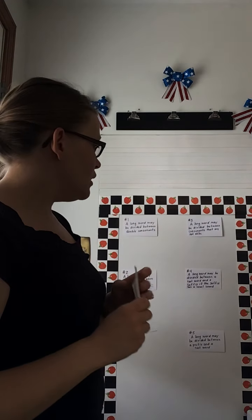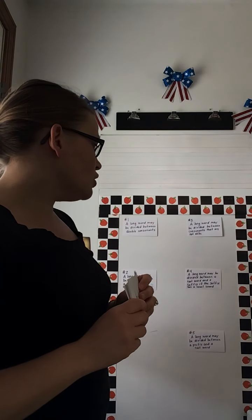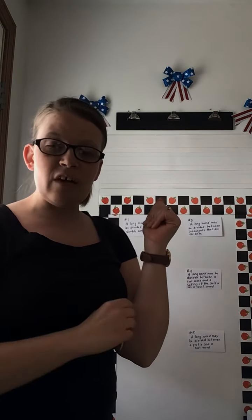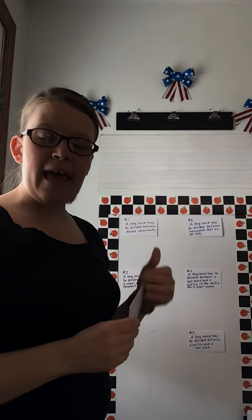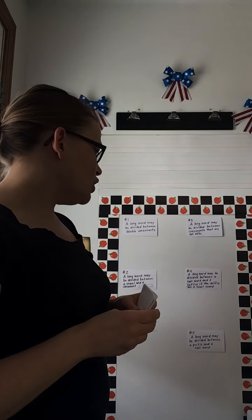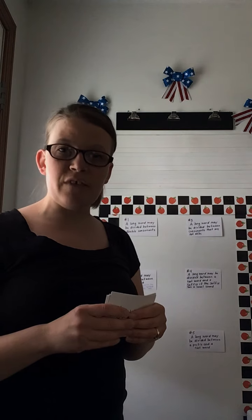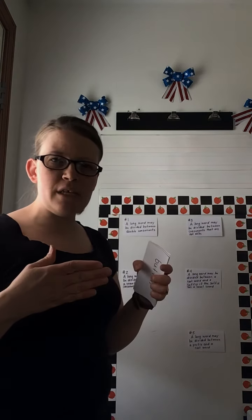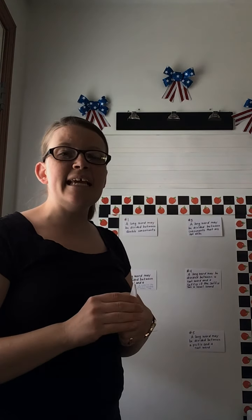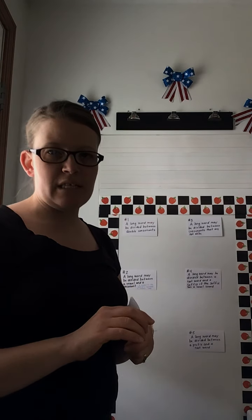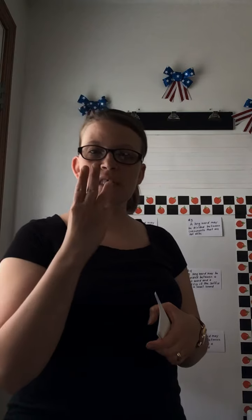Remember, these are long words. Rule four: you can divide a long word between a root word and a suffix if the suffix starts with a vowel sound like 'eh' or 'ih,' for example. Rule five: a long word may be divided between a prefix and a root word. I don't need you to memorize those, but keep them in mind and see if you can figure out why we divide a word at a certain place — reason one, two, three, four, or five.